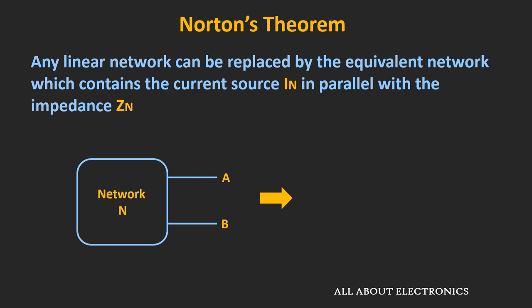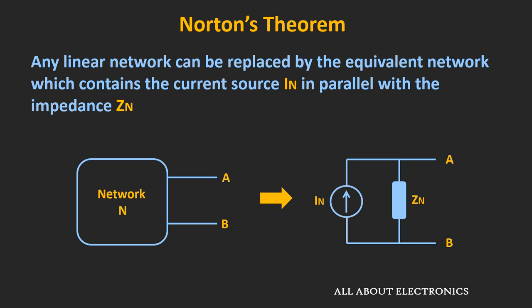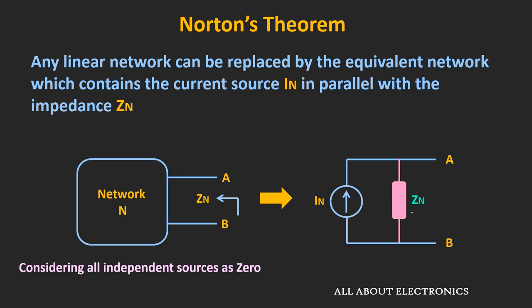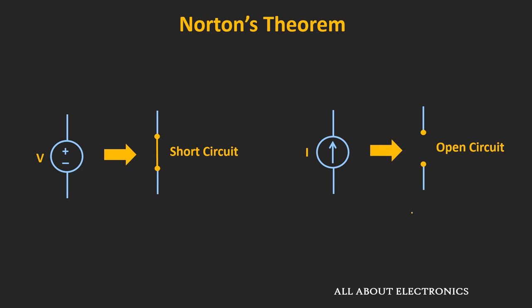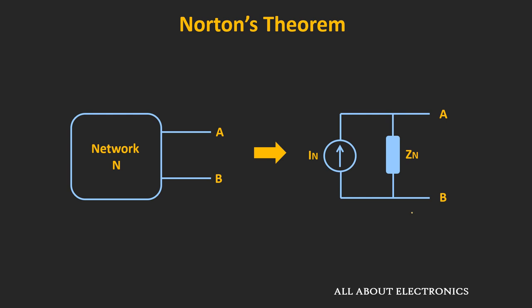According to Norton's theorem, any linear network can be replaced by an equivalent network which contains a current source in parallel with an impedance. So for a network N, it can be replaced across terminals A and B by an equivalent current source In in parallel with an equivalent impedance Zn. Here, In is the short-circuit current flowing through terminals A and B when they are short-circuited. Similarly, Zn is the Norton's equivalent impedance seen through terminals A and B when all independent sources are zeroed — voltage sources replaced by short circuits and current sources by open circuits.